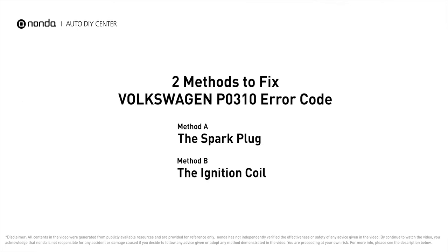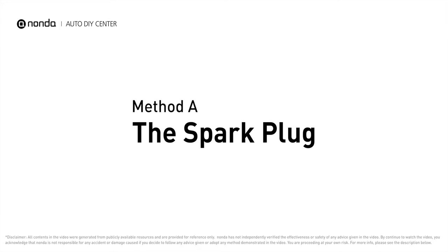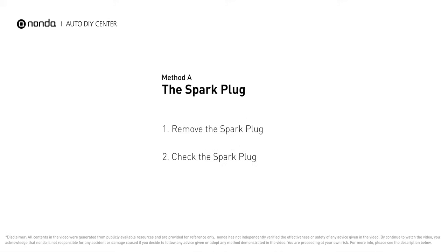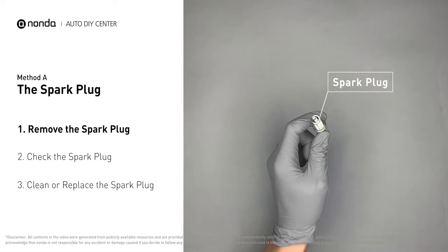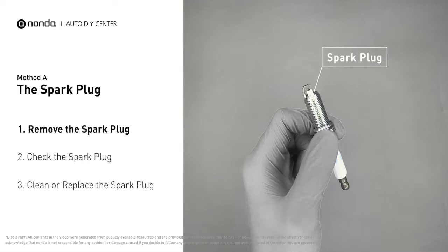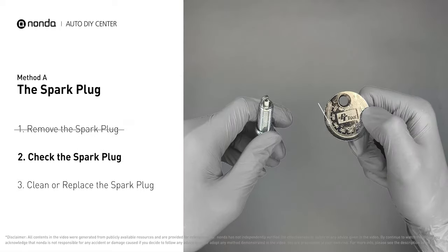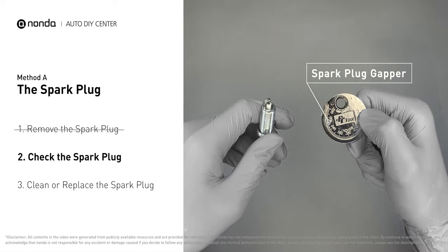Here are two of the most practical solutions to fix Volkswagen's P0310 error code. Method A: the spark plug. The spark plugs are located at the engine end of the wires, under the plug covers that attach them. First, carefully remove the spark plug and use a spark plug gapper to check the spacing.